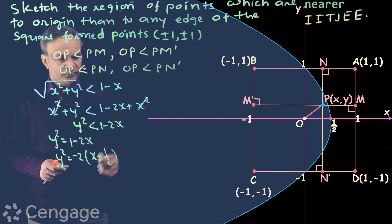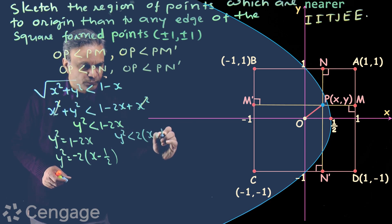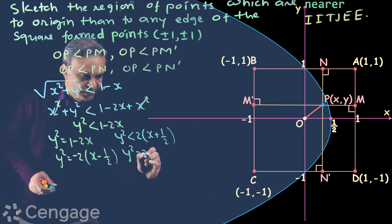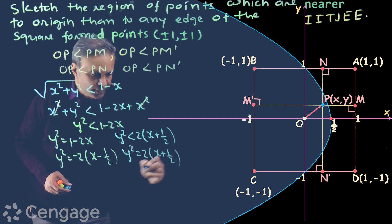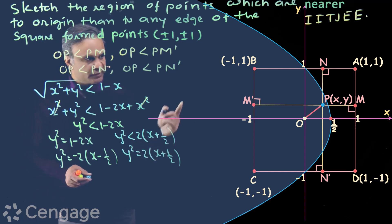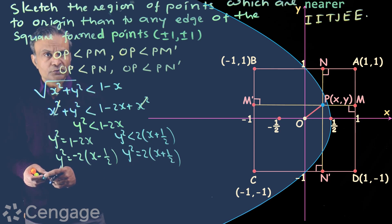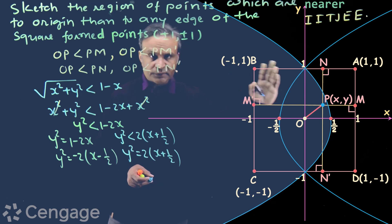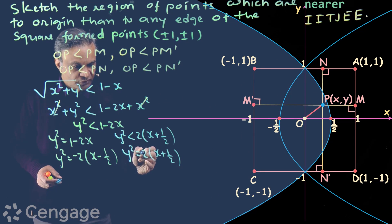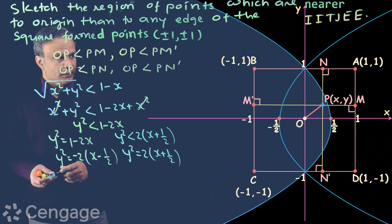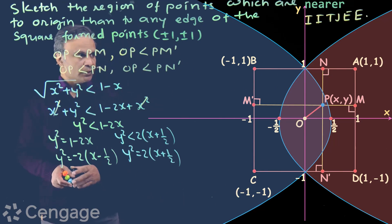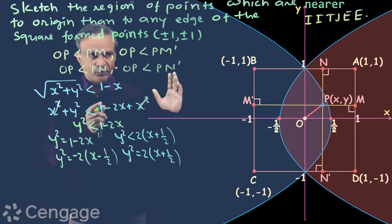From the second inequality, we get y² < 2(x + 1/2). Point P will lie in the interior region of the parabola y² = 2(x + 1/2), whose vertex is at (-1/2, 0). Putting x = 0 gives y² = 1, so this parabola intersects the y-axis at (0,1) and (0,-1). This parabola opens towards the right because the coefficient is positive. Point P lies in the interior region of this parabola, and the common region of these two inequalities is their intersection.